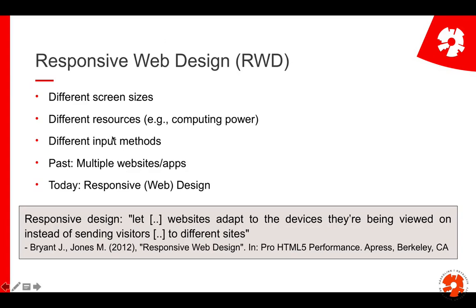You might just have a touchpad or voice input, and these of course require different websites. You cannot use a touchscreen with certain kinds of websites if they require too much detail typing or clicking. You cannot have the same streaming capabilities with low internet speed. So what we did in the past was simply develop multiple websites — a desktop site and a mobile site, or a website plus a native app for Android or iOS.